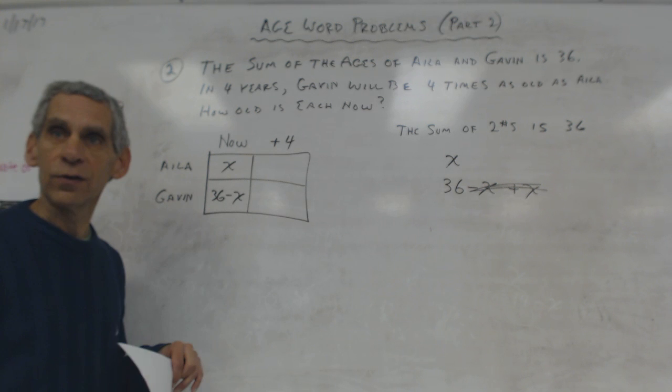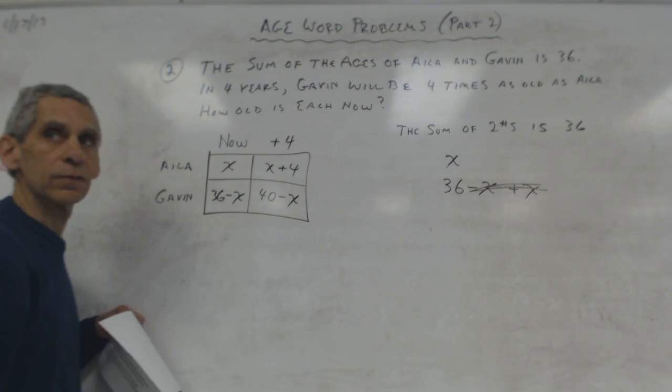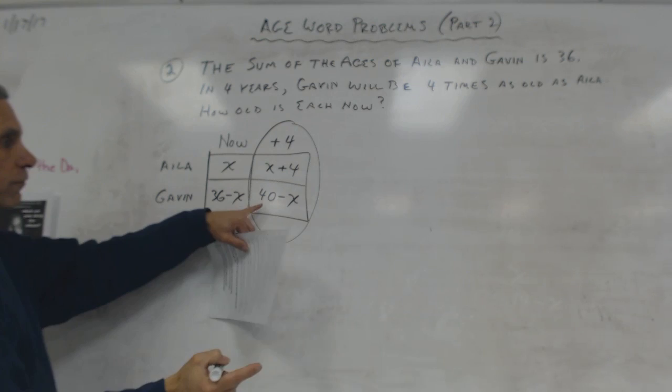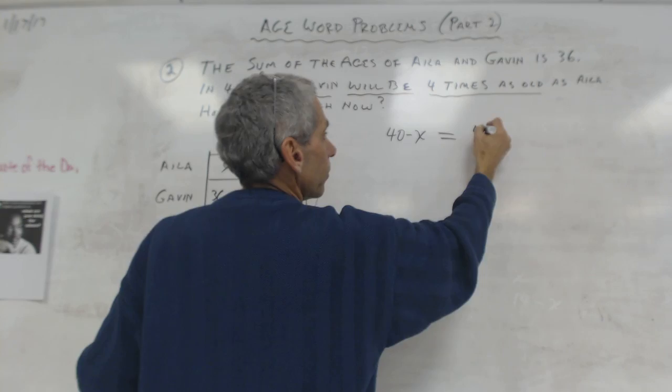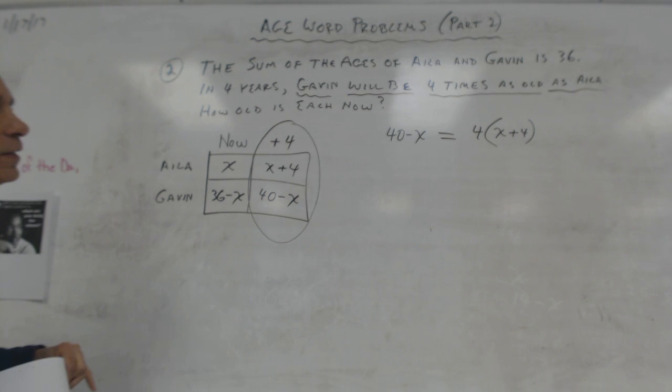Now the rest is straightforward. I'm going to add four to this, so I've got x plus four. I'm going to add four to this, so I've got 40 minus x. Now I write my equation. In four years, that means I'm going to use this information. Gavin, 40 minus x, will be equals four times as old as Isla, x plus four.